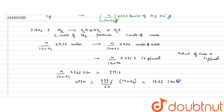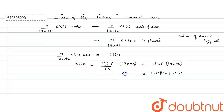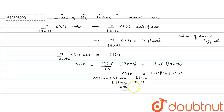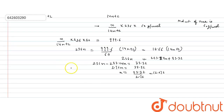Solving: 236n = 16.66 × (14n+2) = 233.24n + 33.32. Therefore 236n − 233.24n = 33.32, giving 2.76n = 33.32, so n = 33.32/2.76 ≈ 12.07. Thus n is approximately 12.